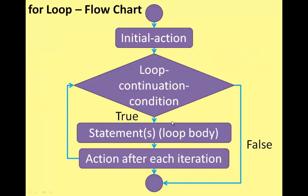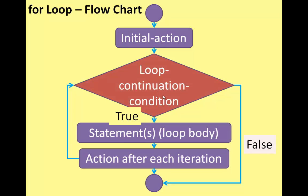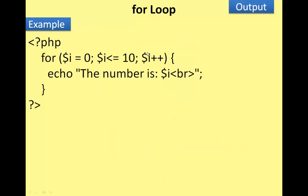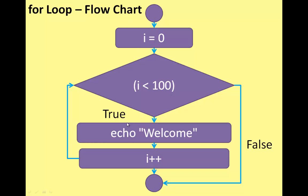If true, the loop continues and changes. First, the initial action. Then the loop continuation condition is checked — if the condition is true, the statement in the loop body executes. Then action after each iteration. Next, the loop continuation condition is checked again. If it becomes false, the loop ends.